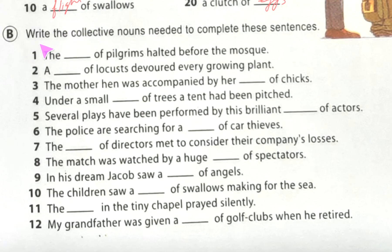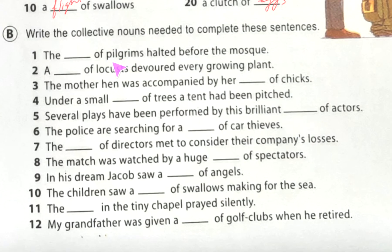Now it is the turn of exercise B: write the collective nouns needed to complete these sentences. You will get a clue from the noun in the sentence. For example, number one: 'The dash of pilgrims halted before the mosque.' The clue is 'pilgrims,' so the collective noun for pilgrims is 'band.' Number two: 'A dash of locusts devoured every growing plant.' Locusts' collective noun is 'plague' or 'swarm' — you can write either.